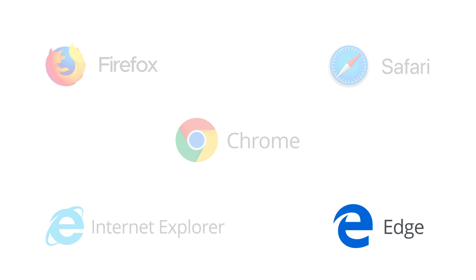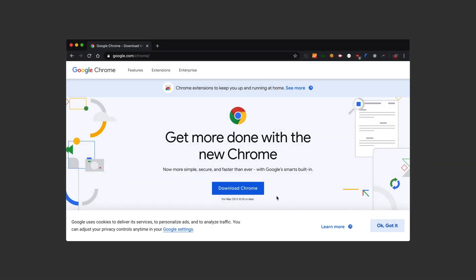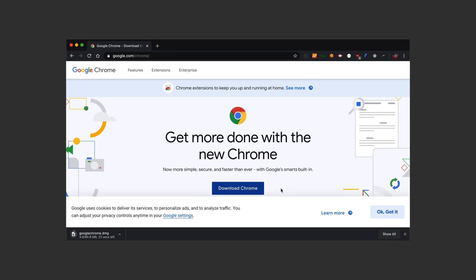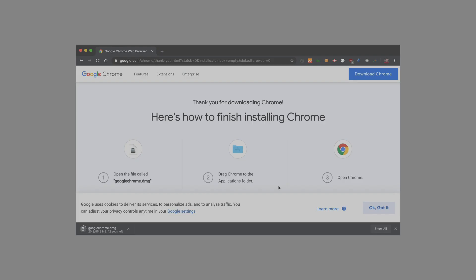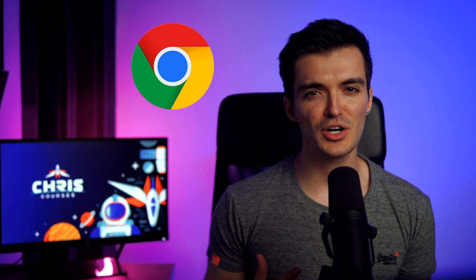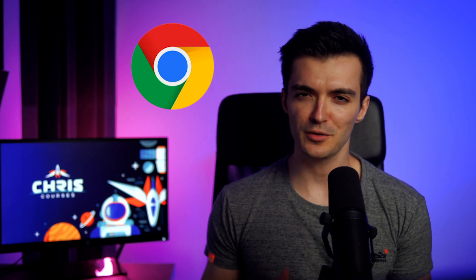Edge is a much improved version of Internet Explorer, so if you have to choose between Edge or Internet Explorer, make sure you're going with Edge, because Internet Explorer is notorious for its poor code rendering. If that's all you have on your computer, I really recommend just going to Chrome's official website and downloading Chrome from there. My favorite browser is Chrome, and that's what I'll be using throughout the remainder of all CrissCourses' videos.